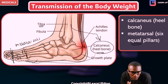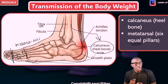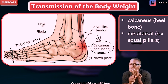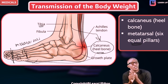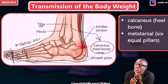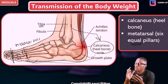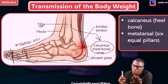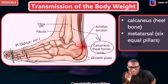The full pathway of weight transmission: vertebral column → sacroiliac joint → pelvic girdle → hip joint → femur → knee joint → tibia → calcaneus → head of metatarsals. The big toe is called the hallux, while the small toe is called the minimus or quinti. The weight is distributed in the foot at two points: the calcaneus and the six pillars of the metatarsals.